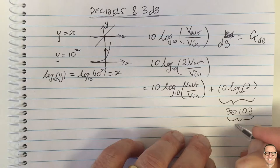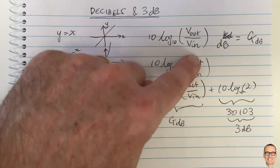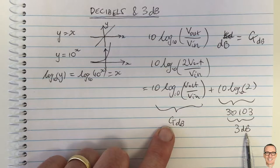...and this number if you plug it into a calculator you find equals 3.0103 and so this is what we call 3 dB and this of course is just gain dB our original gain.